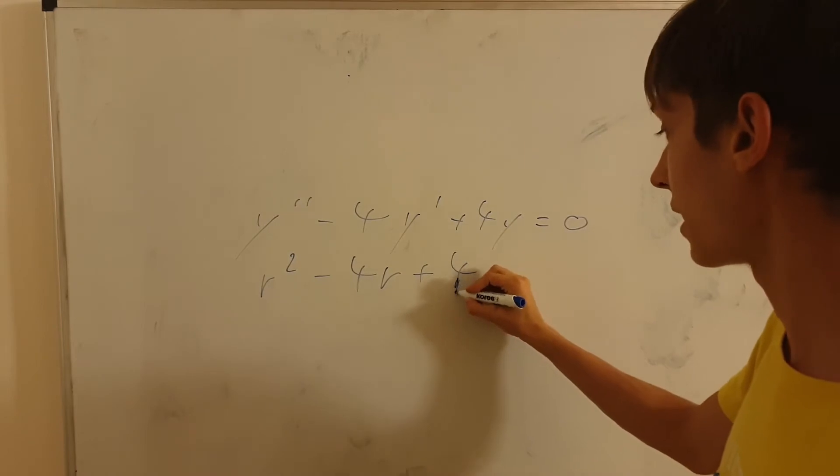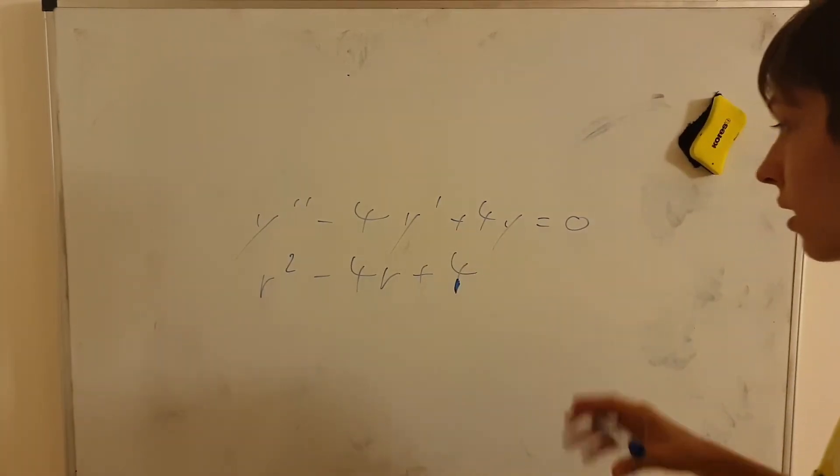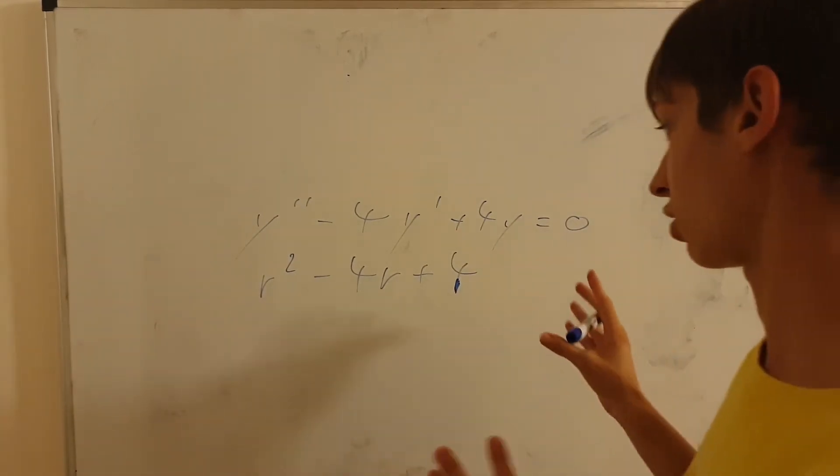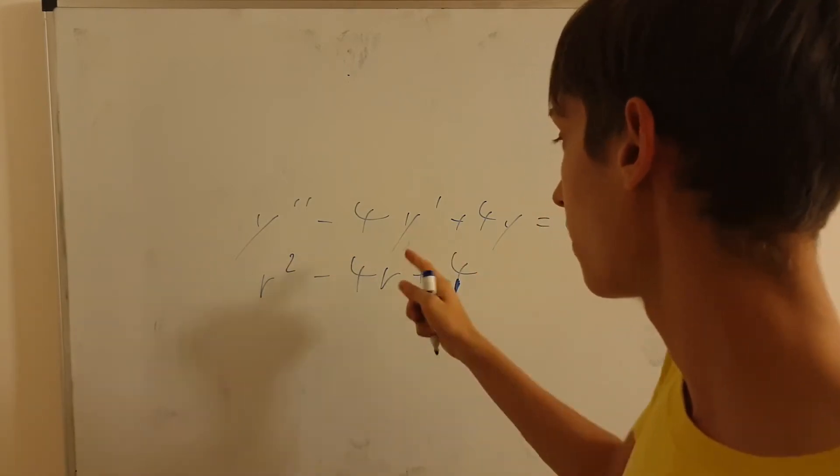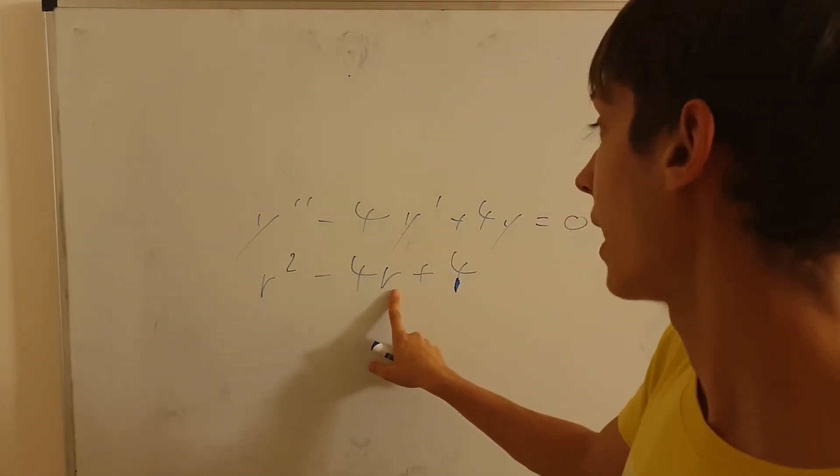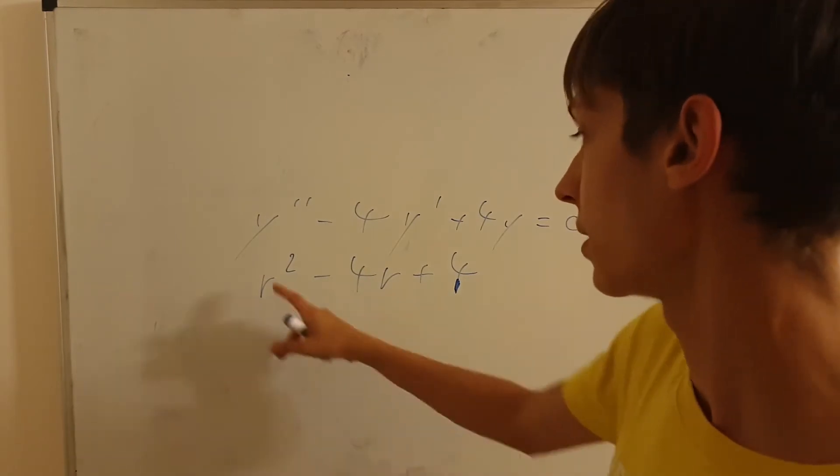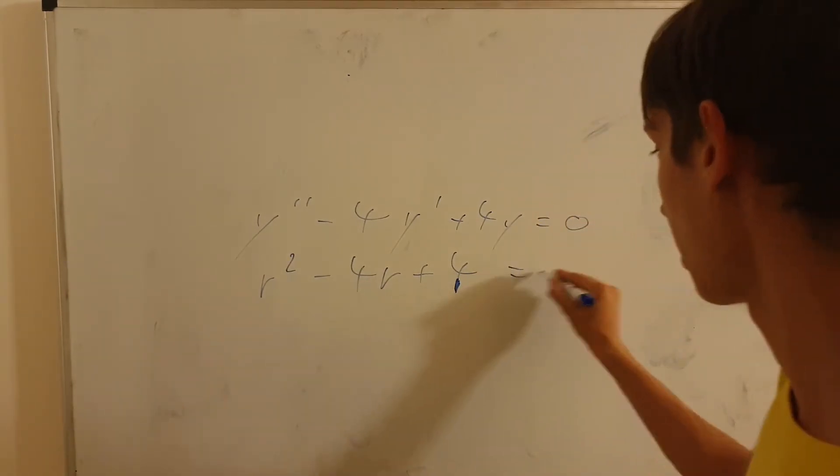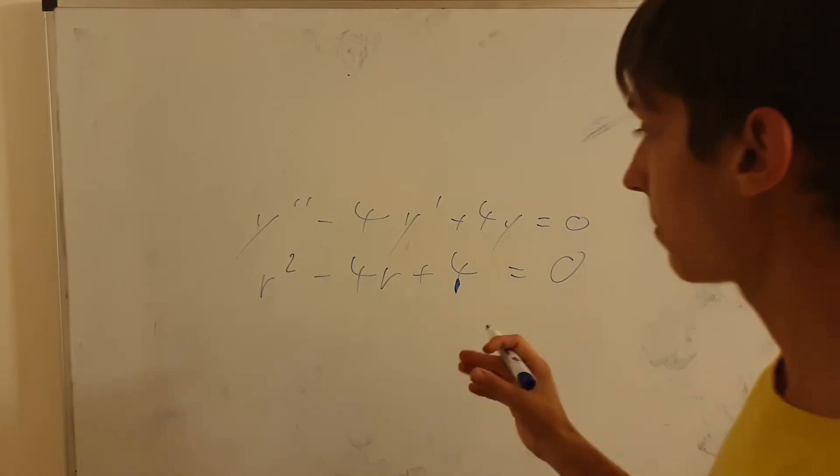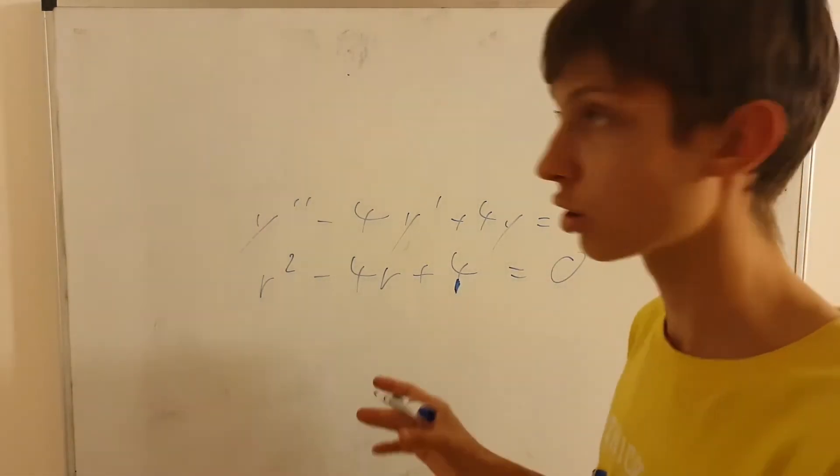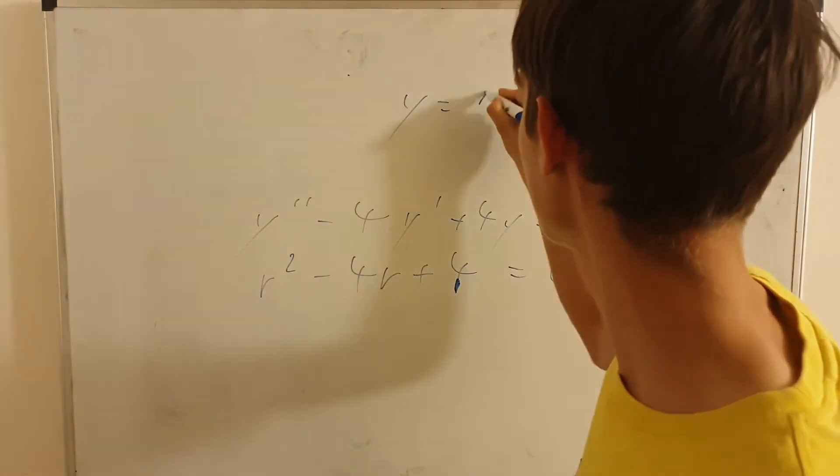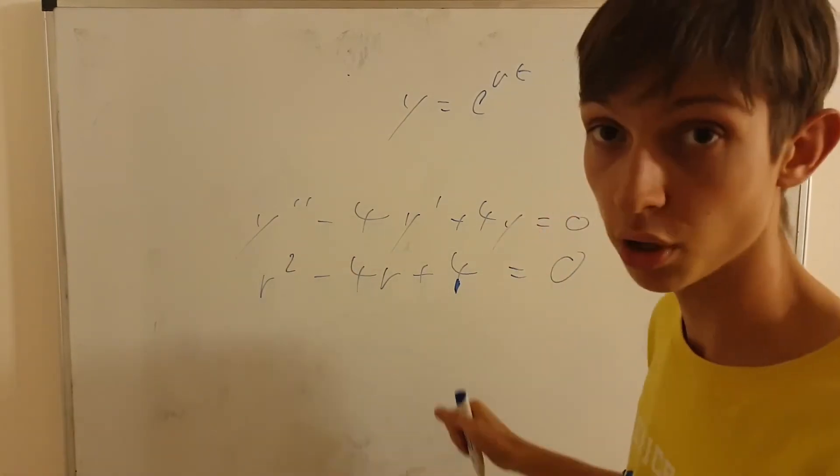Therefore, the idea is where there is y, it is just 1, when there is y prime, you replace it by r, and when there is y double prime, it's r squared. You can write it as a quadratic equation as such, but keeping in mind that all this stuff works on the basis of this substitution.